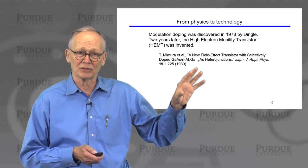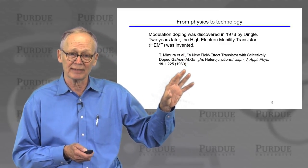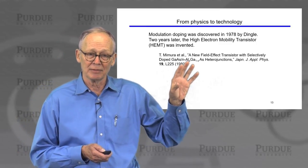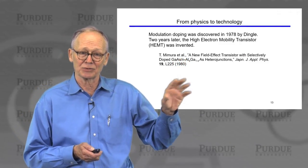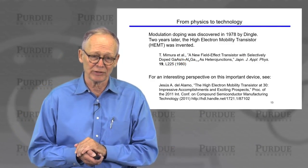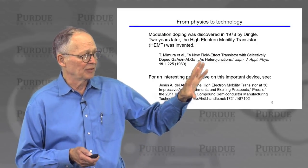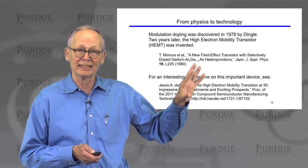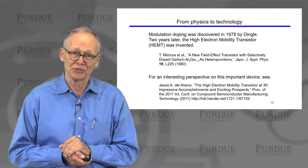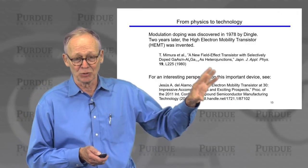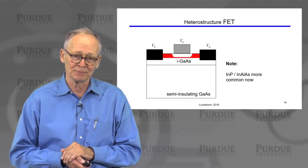Two years after the 1978 discovery of modulation doping, a practical transistor application was invented by Mimura et al. — the high electron mobility transistor (HEMT). It was very quickly put to use. For more on the history of this device over its 30-plus years, a second reference paper is provided.